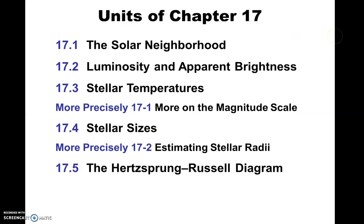We're going to start with our solar neighborhood — about 100 stars or so around our sun, which is just a small drop in the bucket when it comes to all the stars in our galaxy. We'll talk about luminosity and apparent brightness. Apparent brightness is basically how bright the star appears in the night sky. Luminosity is how much energy — or power — is coming off the star, as though we were thinking about a 100-watt light bulb whose brightness gets smaller as you get further away according to the inverse square law, which we studied in laboratory.